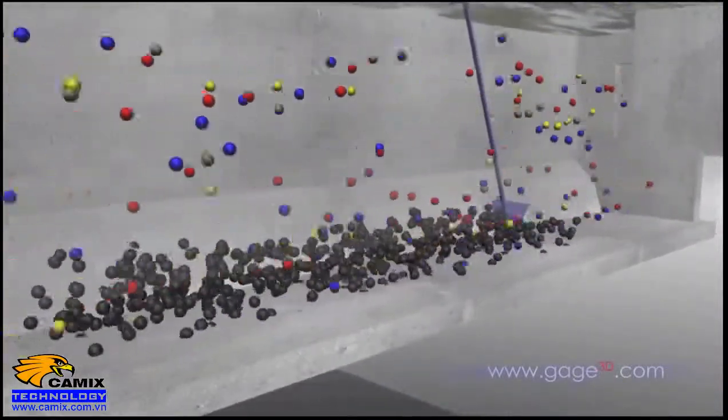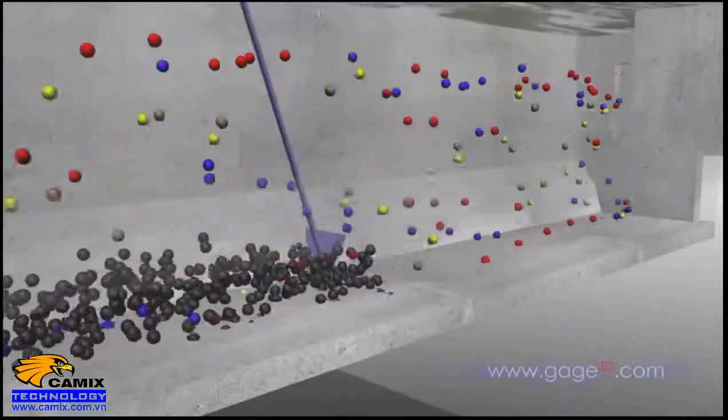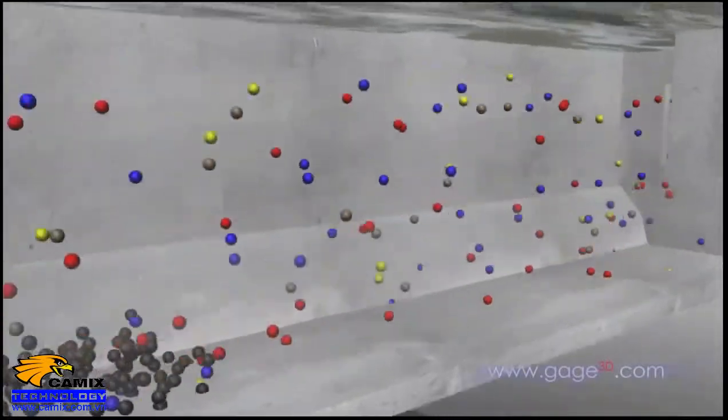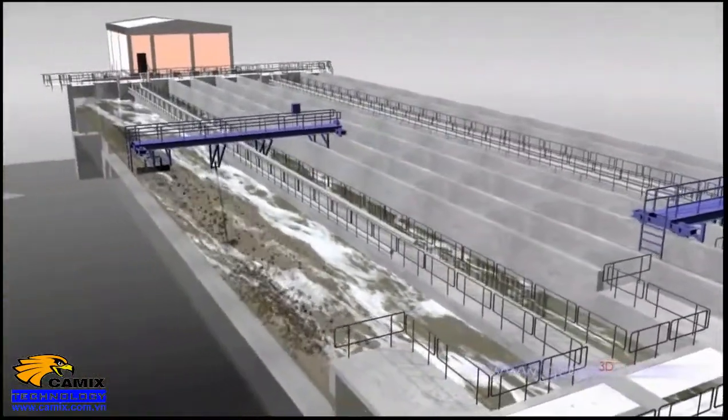As grit settles out, a rake runs along the bottom of the tank, sweeping the grit away. Removing grit early on is important because it is abrasive and can erode mechanical equipment. It can also build up in later treatment processes.